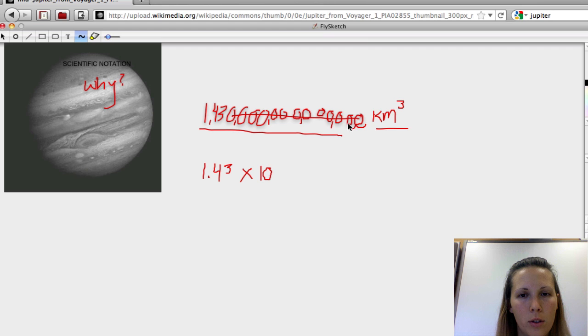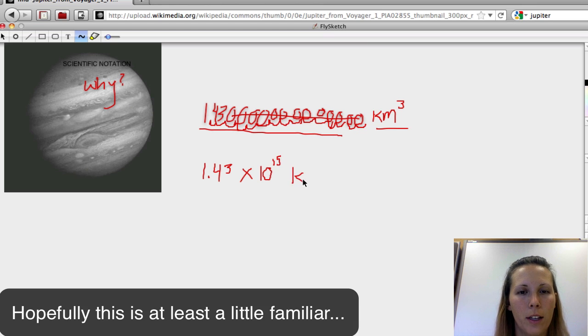And we multiply it by 10 to the number of places that we just moved. So we went 1, 2, 3, 4, 5, 6, 7, 8, 9, 10, 11, 12, 13, 14, 15. So the volume of Jupiter is 1.43 times 10 to the 15 cubic kilometers.